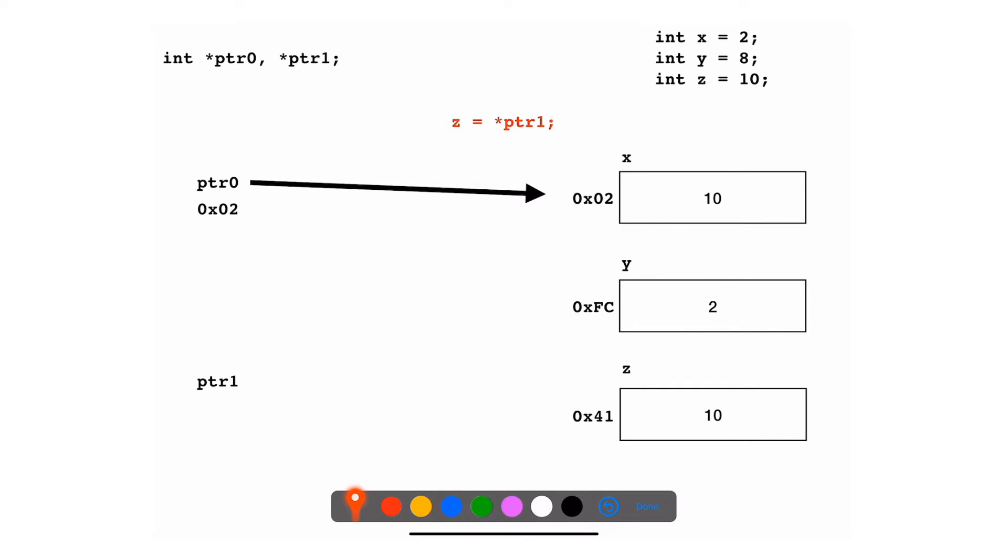Next, what we're going to be doing is we're going to say z should equal whatever ptr1 points to. However, ptr1 is not pointing to anything. So what you're going to be doing is you're going to get an error, generally speaking, or you will be accessing a memory space that you're not supposed to access. If you're in a desktop-like environment with an operating system, you're going to get a bunch of errors. But generally speaking, this is an error. You have to make ptr1 point to something. It has to have a pointy before you dereference it.